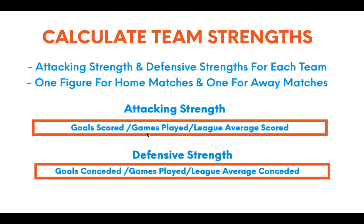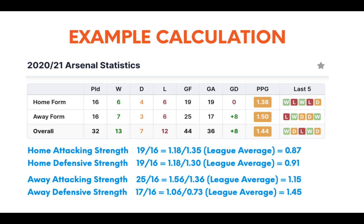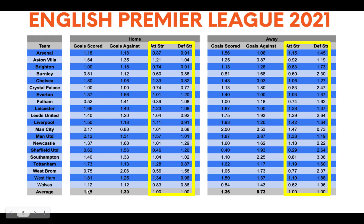For attacking strength, the calculation is: goals scored at home divided by games played at home, divided by the league average goals scored in home games. The defensive strength is similar: goals conceded at home divided by games played at home, divided by the league average goals conceded in home games. For Arsenal's home attacking strength, they've played 16 games and scored 19 goals at home, so 19 divided by 16 gives 1.18 average goals per game at home. We then divide that by the league average of 1.35.